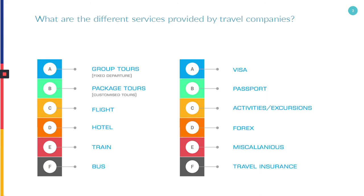Miscellaneous: this includes services apart from the above, as well as a combination of the above-mentioned multiple services. Insurance: this covers only travel insurance related services.